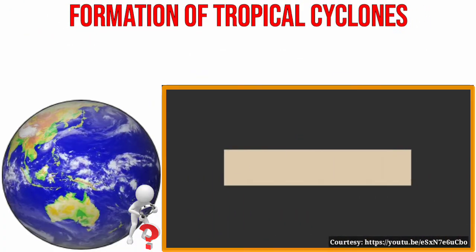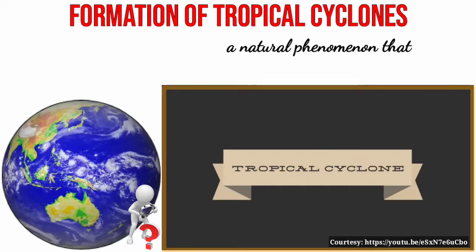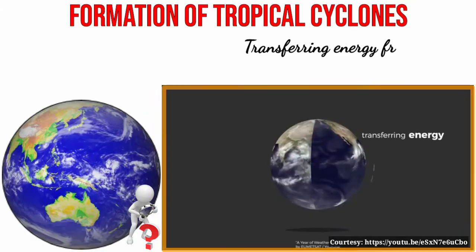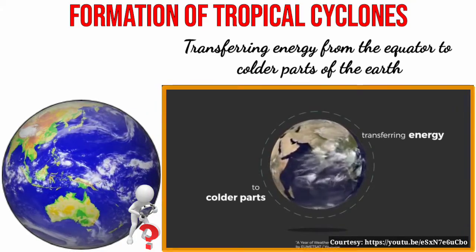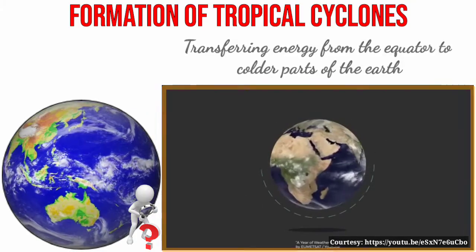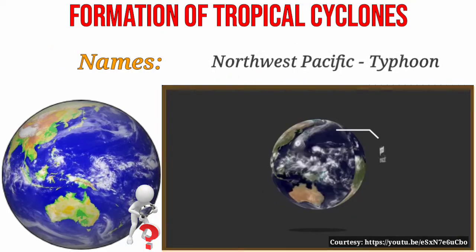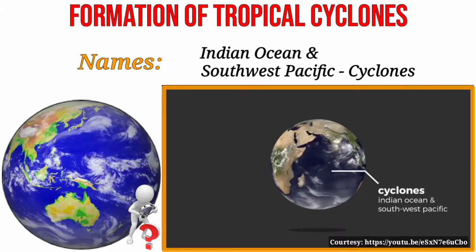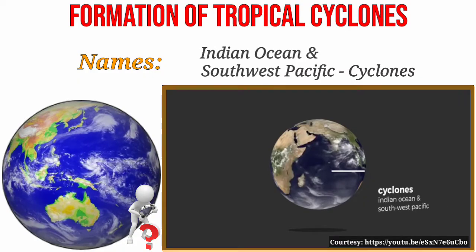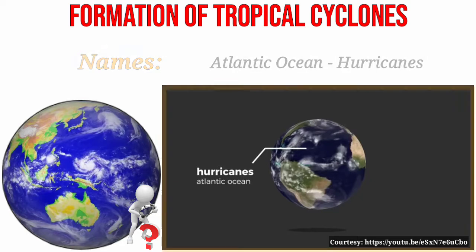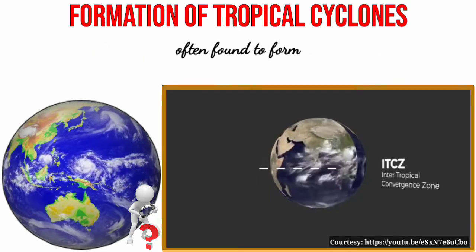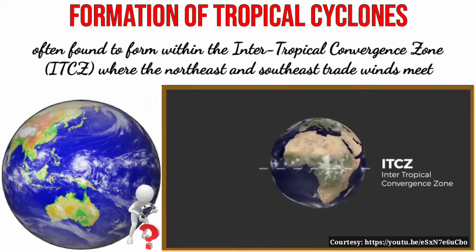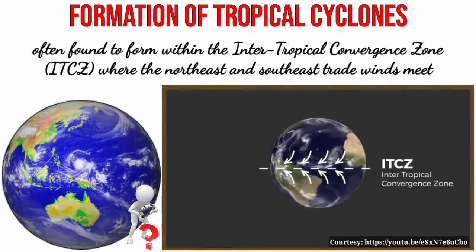The formation of tropical cyclones is a natural phenomenon used by the earth to attain balance or equilibrium, transferring energy from the equator to colder parts of the earth. They are called by various names: in the northwest Pacific, we call them typhoons; in the Indian Ocean and southwest Pacific, they are called cyclones; and in the Atlantic, they are called hurricanes. They often form within the Intertropical Convergence Zone, or the ITCZ, where the northeast and southeast trade winds meet.